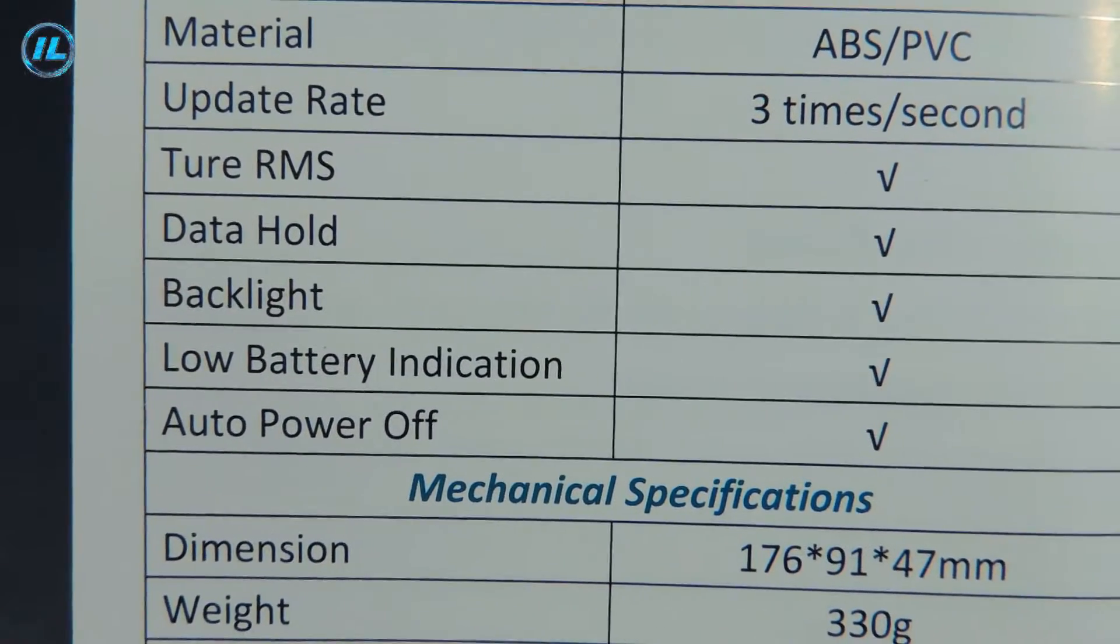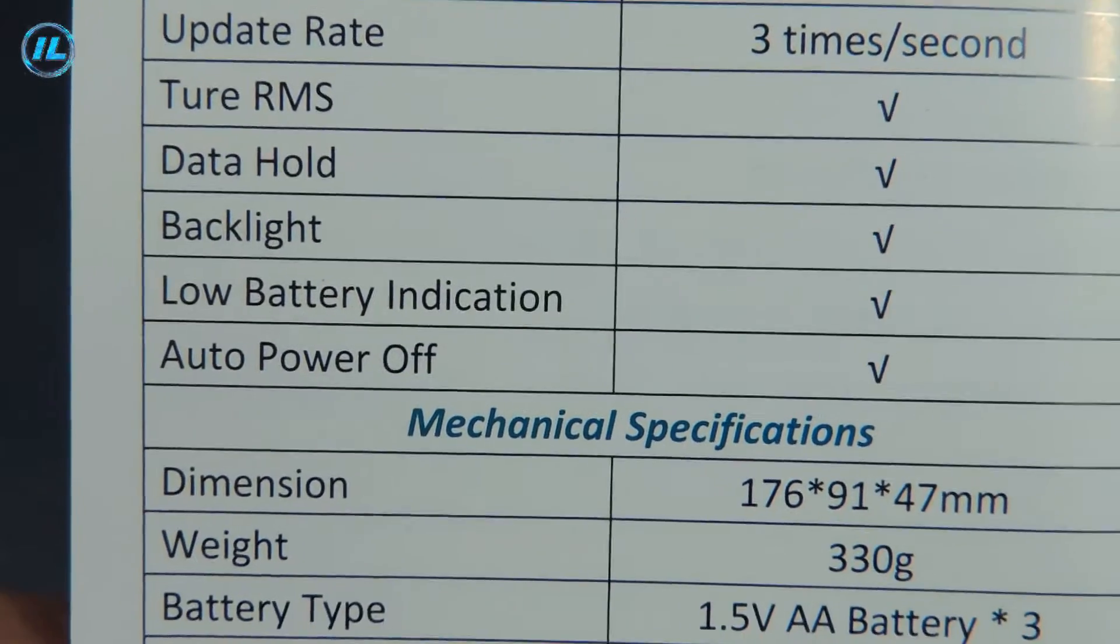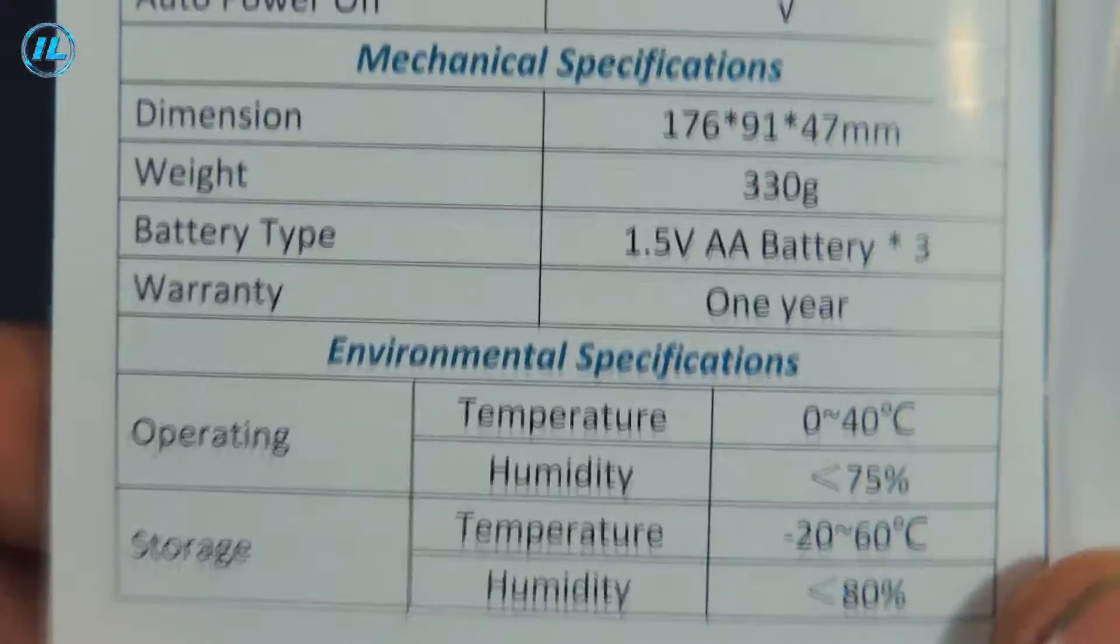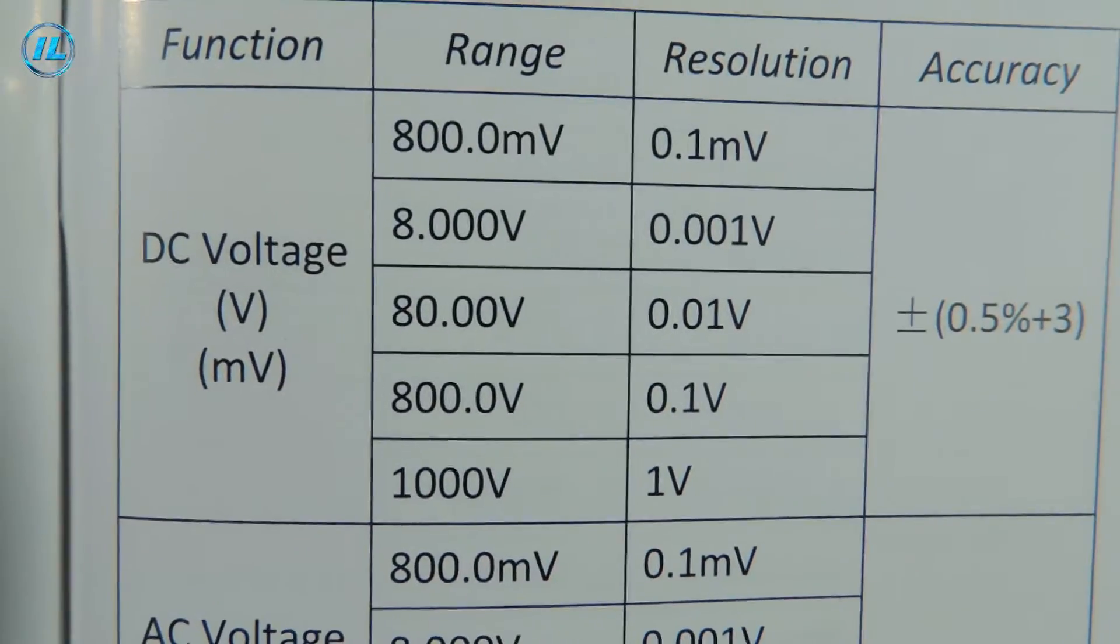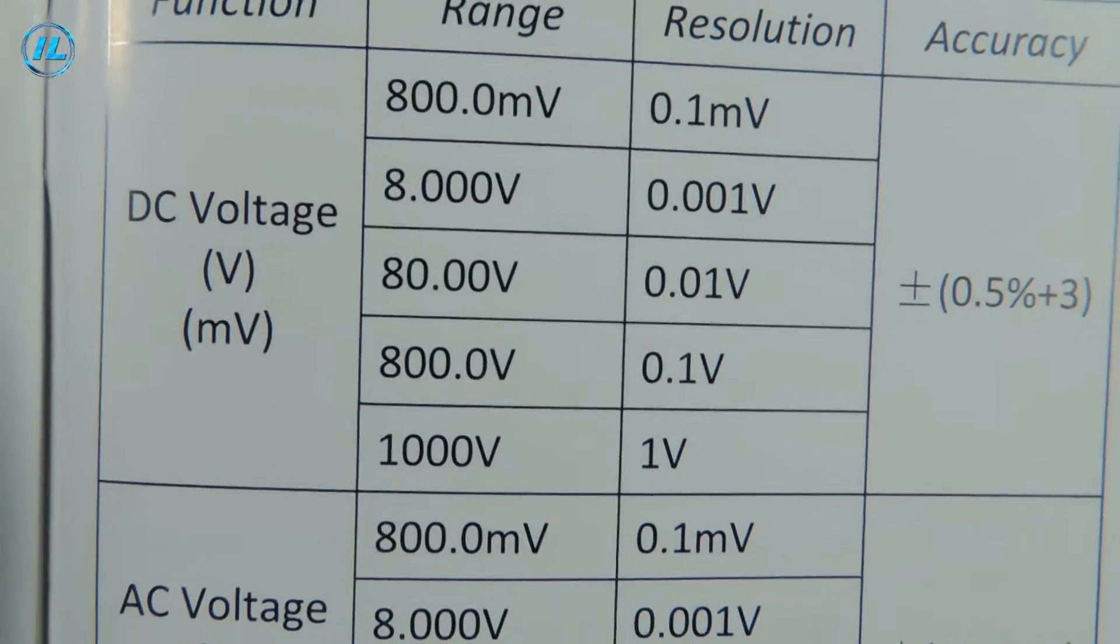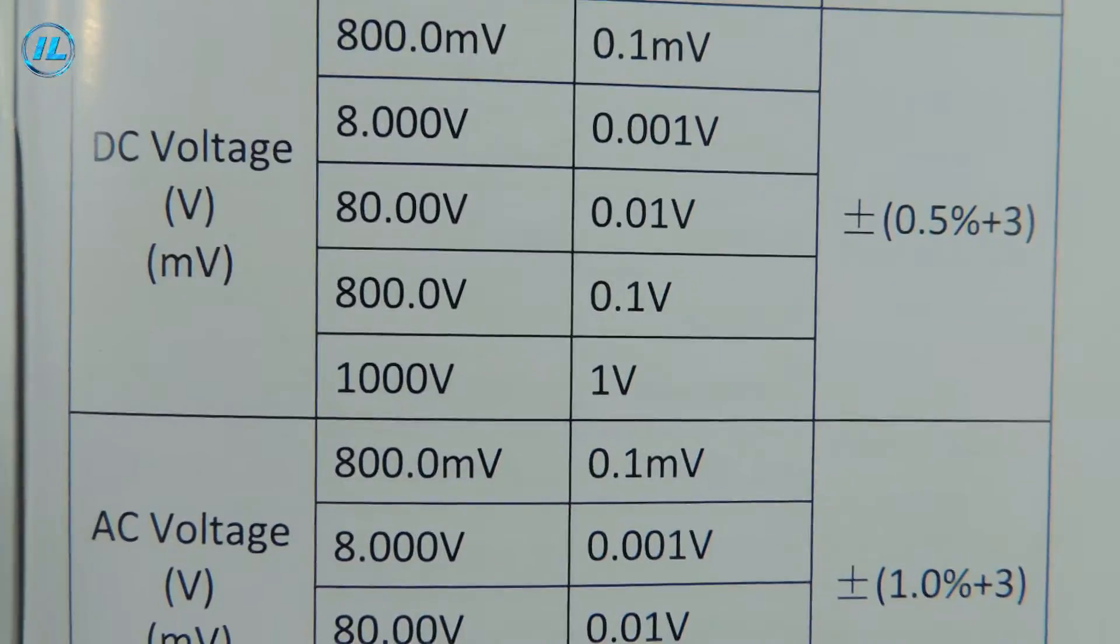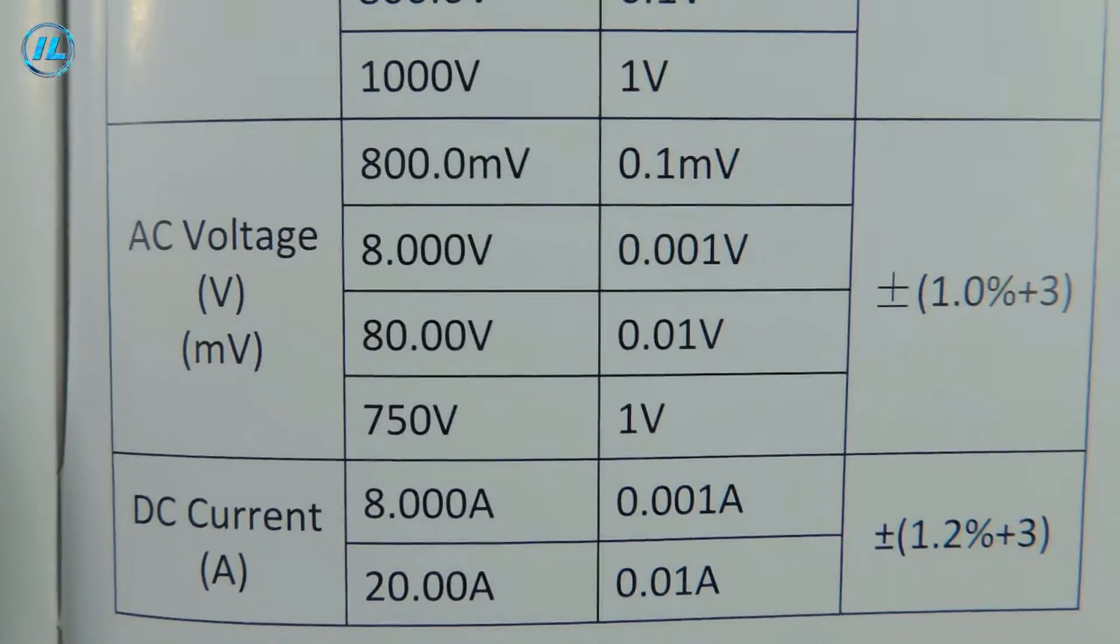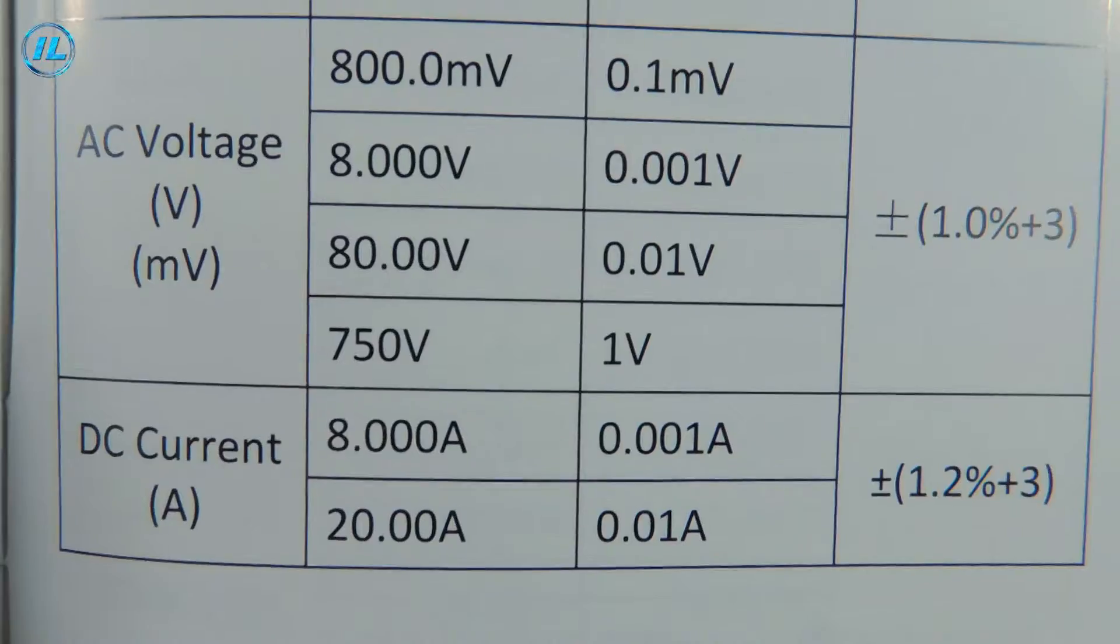There is a flashlight, low battery indication and auto power off. This multimeter can measure a constant voltage up to 1000 volts. At the same time, the margin of error will be only 0.5%.